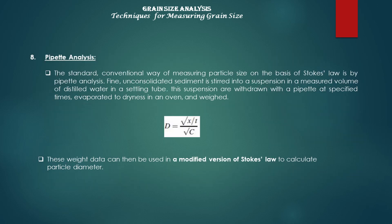The next technique is pipette analysis. The standard, conventional way of measuring particle size on the basis of Stokes' law is by pipette analysis. Fine, unconsolidated sediment is stirred into a suspension in a measured volume of distilled water in a settling tube. The suspension is withdrawn with a pipette at specified times, evaporated to dryness in an oven, and weighed. These weighed data can then be used in a modified version of Stokes' law to calculate particle diameter.